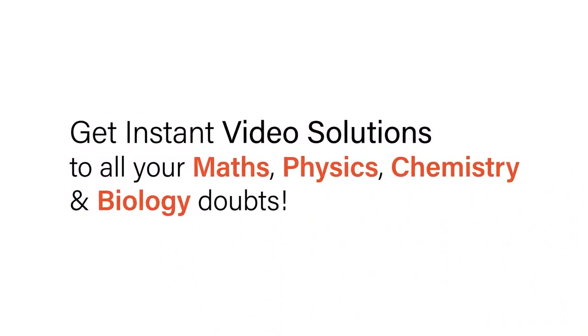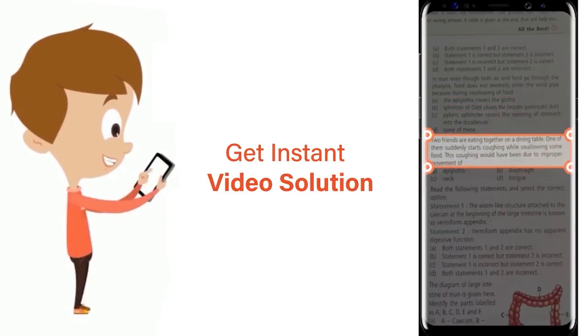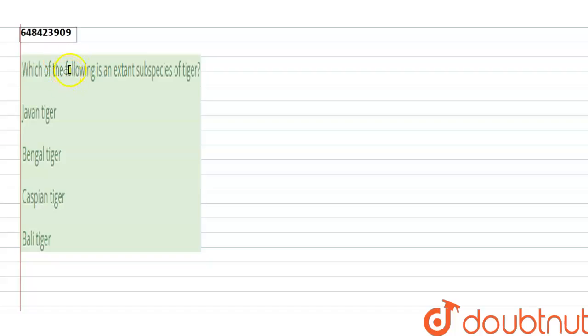With Doubtnut, get instant video solutions to all your maths, physics, chemistry and biology doubts. Just click the image of the question, crop the question and get instant video solution. Download Doubtnut app today. Hi, the question is which of the following is an extant subspecies of tiger?